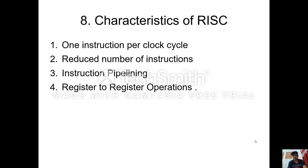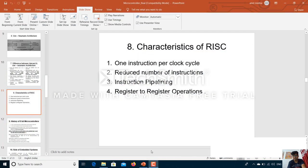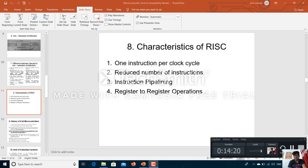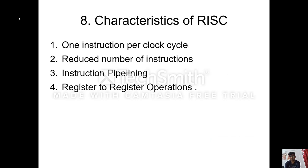The next topic is characteristics of RISC — Reduced Instruction Set Computer. The various characteristics of RISC are: first, one instruction per clock cycle; second, reduced number of instructions; third, instruction pipelining; and fourth, register to register operations. Regarding the first characteristic: in RISC processors, there is one instruction per clock cycle. A machine cycle is defined as the time required for fetching the operands, decoding and executing the instructions, and storing the result in a register. Hence, one instruction is executed in one clock cycle and they can be executed very fast.